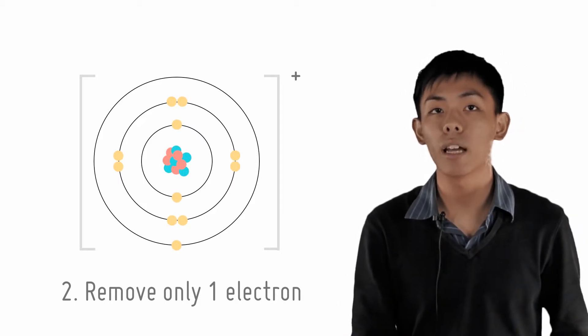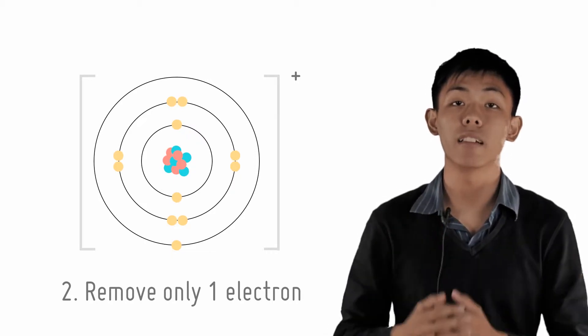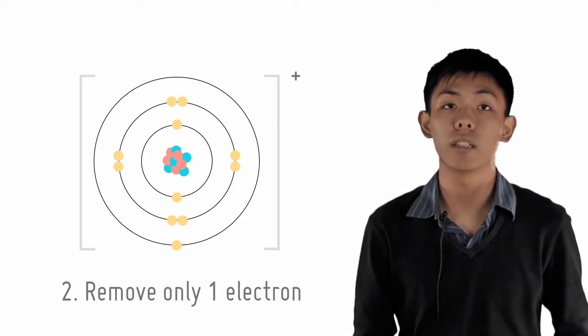Of course, for group 1 metal elements, since the outermost shell has only one electron, it belongs to both categories. In such a case, the first reason may be more intuitive.